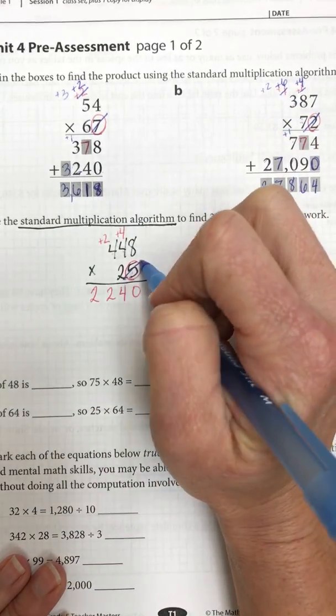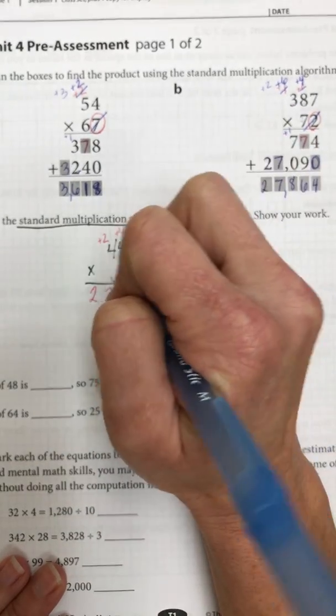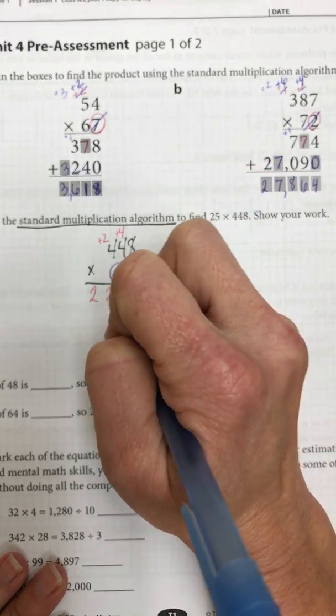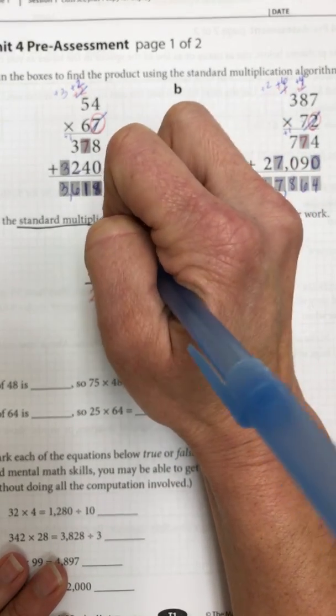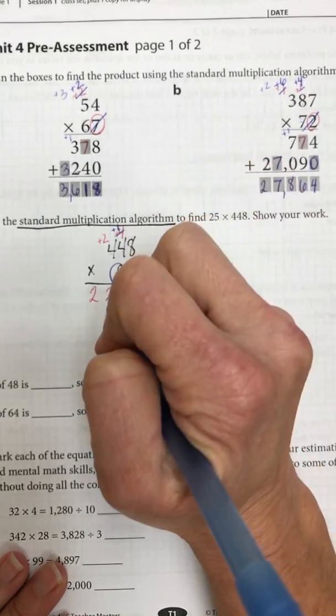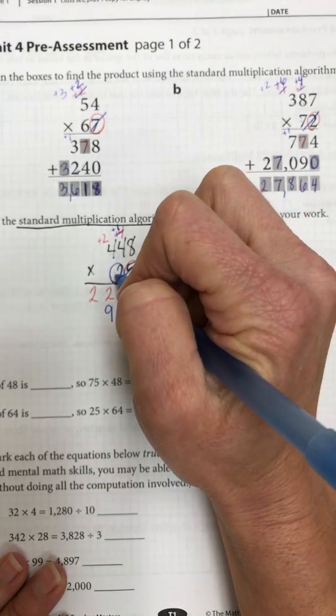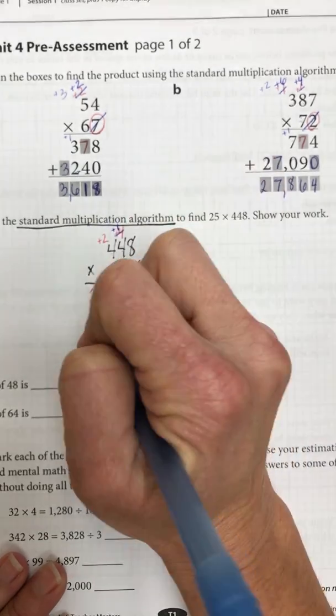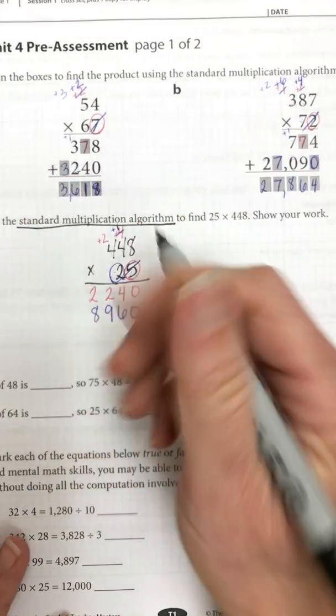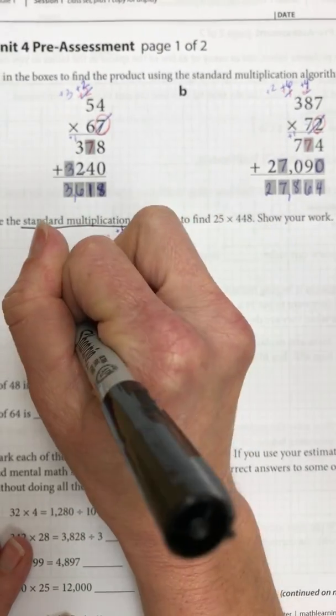Now I'm going to move on. Cross off my 5, drop my 0, and now it's time to use the 2. 2 times 8 is 16, 6, carry my 1. 2 times 4 is 8 plus 1 is 9. 2 times 4 is 8, so I have 8.